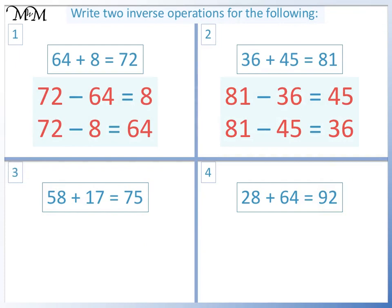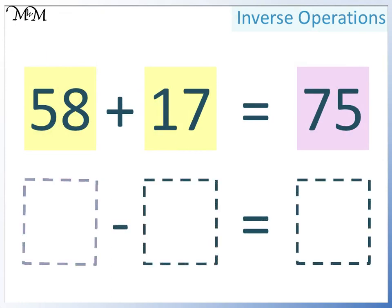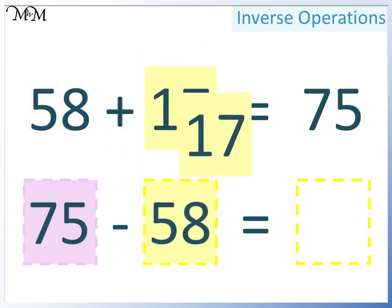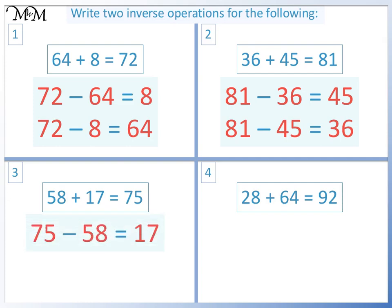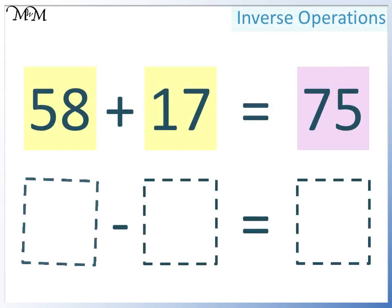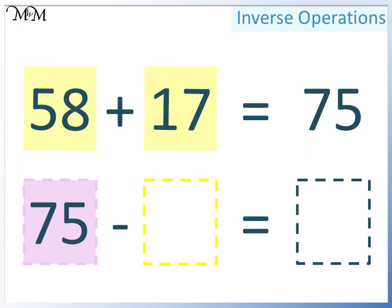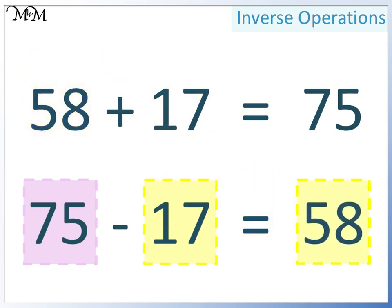Question 3: 58 add 17 equals 75. We'll have the largest number at the start — that's 75. Next we can have either of the two smaller numbers. This time we'll have 58, and the final number will be 17. 75 take away 58 equals 17. Alternatively, in the first space we will still have 75. In the next space this time we will have 17. In the final space we have 58. 75 take away 17 equals 58.